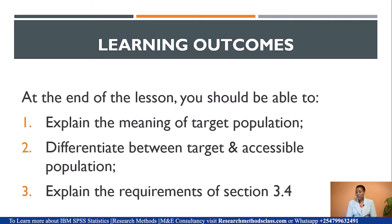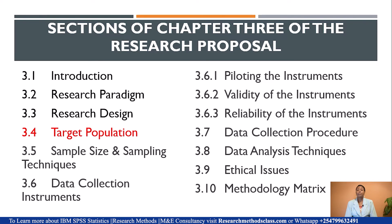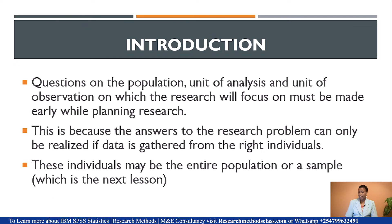At the end of this lesson, you should be able to explain the meaning of Target Population, differentiate between Target and Accessible Population, and explain the requirements of Section 3.4. From the sections of Chapter 3, we have already discussed Research Paradigm in Lesson 61, Research Design in our just-added lesson, and now we are discussing Target Population.